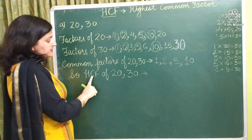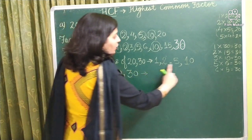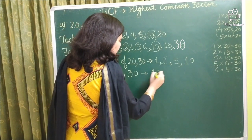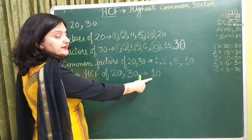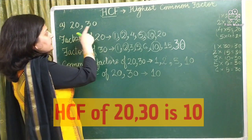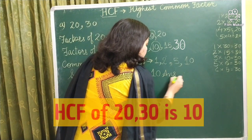So now the last step. That is highest common factor of 20 and 30. So among all these factors which one is highest? Highest is 10. So we can say that 10 is the HCF of 20 and 30. So 10 is our answer.